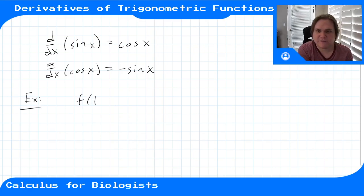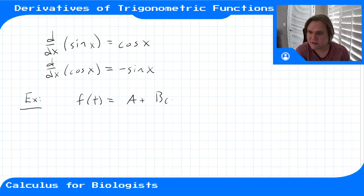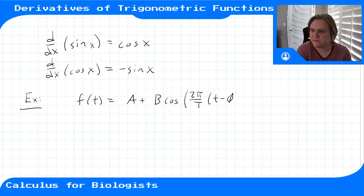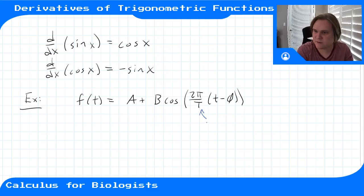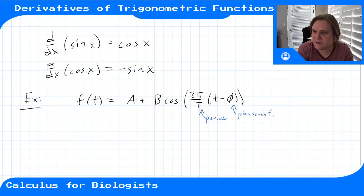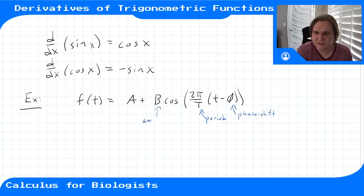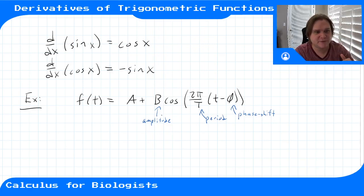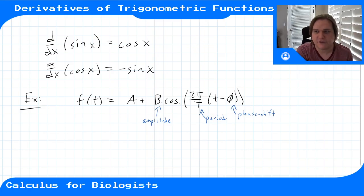Let's say we had f of t equals a plus b cosine of 2π over T, times t minus b. Here capital T is our period. This b is our phase shift — at t equals 0, it gives you the phase of your cosine. The other b here is the amplitude: if b equals 1, cosine goes from 1 to minus 1; if b is 10, cosine goes from negative 10 to 10. And a is just a vertical shift.